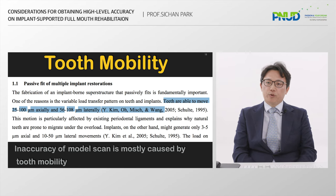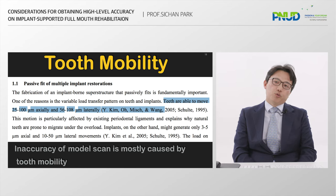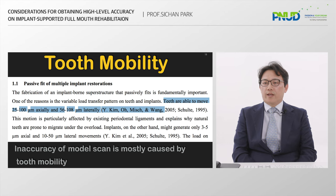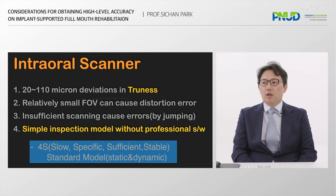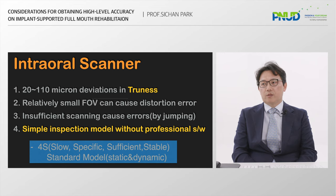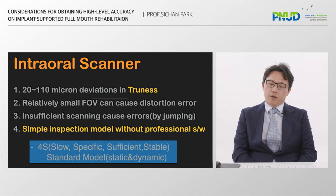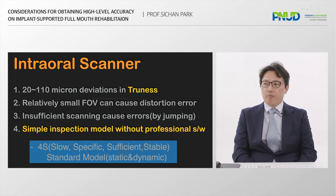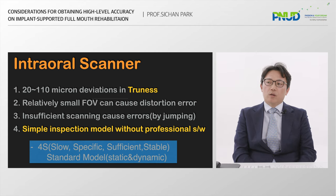The next one is the intraoral scanner. It is the most commonly used item, but it's very technique-sensitive. It can be easily affected by saliva, cheek, mobile tongue, and edentulous areas. The translucency difference of gingival tissue and teeth is a very important factor. I suggest four crucial tips for proper intraoral scanning: Slow, Speak speed, Sufficient, and Stable — all initials are S, so it's called the 4S strategy.